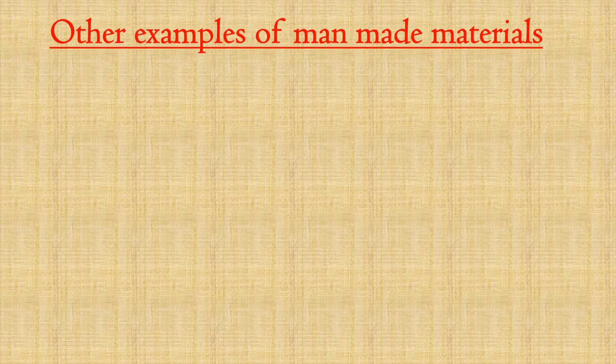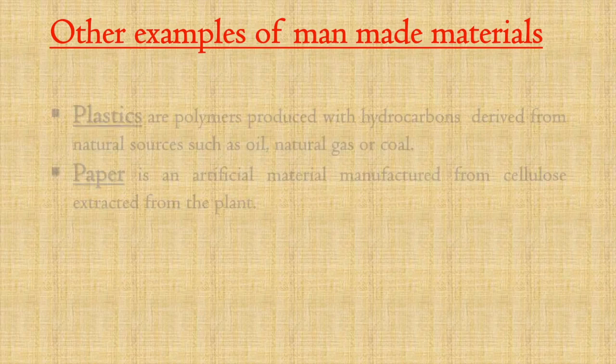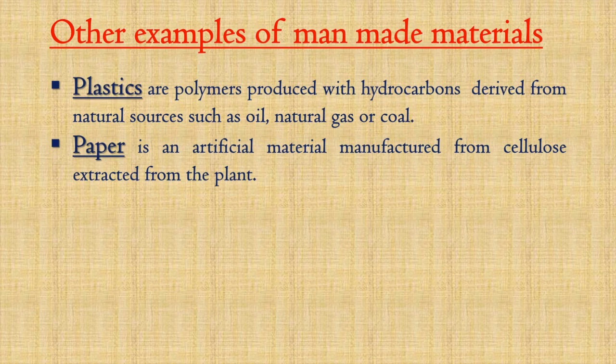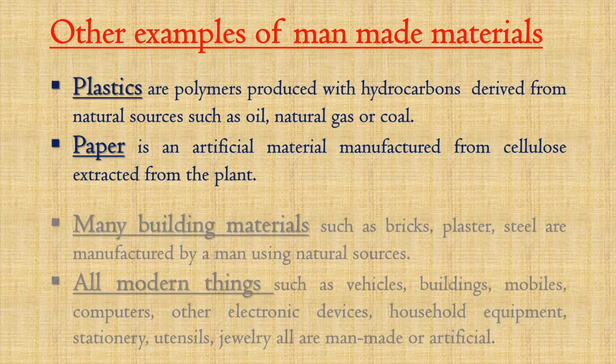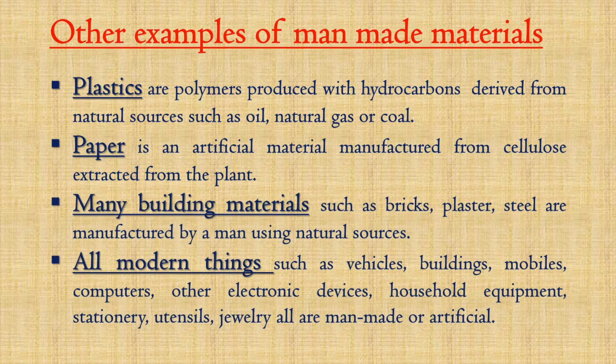Other examples of man-made materials: plastics are polymers produced with hydrocarbons derived from natural sources such as oil, natural gas, or coal. Paper is an artificial material manufactured from cellulose extracted from plants. Many building materials such as bricks, plaster, and steel are manufactured by man using natural sources.